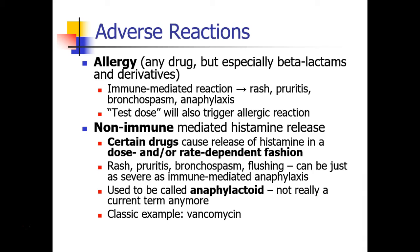Allergic reactions are immune-mediated histamine release. But we can also have non-immune-mediated histamine release, where certain drugs cause release of histamine in a dose or rate-dependent fashion. We can still see rash, pruritus, bronchospasm, and flushing just as severe as immune-mediated anaphylaxis. Previously this was called an anaphylactoid reaction, but that's not really a current term anymore. Now we call all anaphylaxis just plain anaphylaxis, and we subcategorize them into immune and non-immune mediated. The classic example of a non-immune-mediated anaphylaxis could be vancomycin causing Redman syndrome.